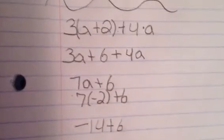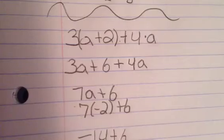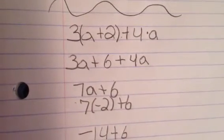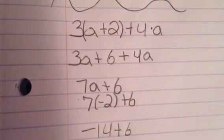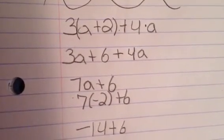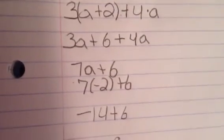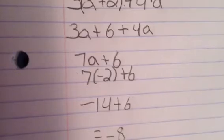And the second way to do this problem is to distribute first and then evaluate by substituting and simplifying. So, when you distribute first, you come up with 3a plus 6 plus 4a. You add both of the numbers that have the a's attached to them together, and that is 7a plus 6.